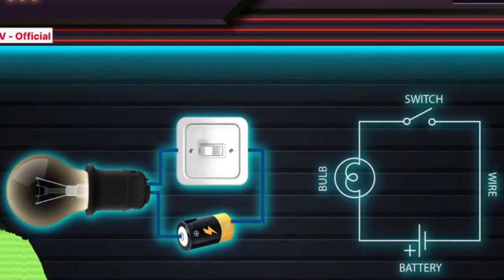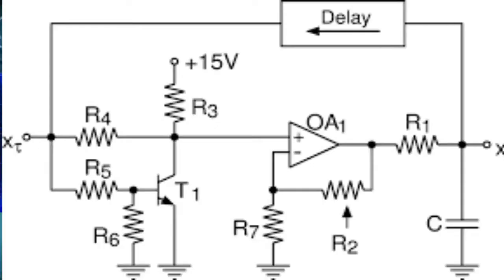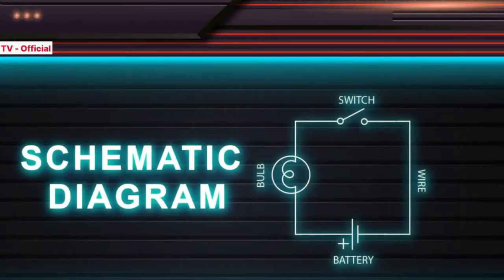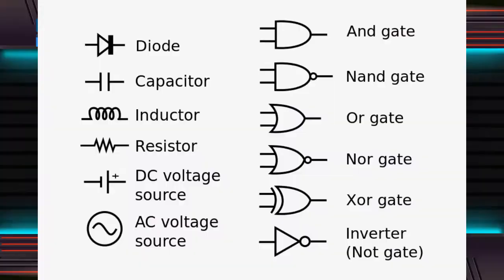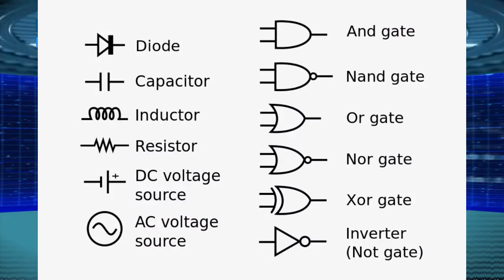A schematic diagram shows the components and interconnection of the circuit using standardized symbolic representations. In the electrical and electronics industry, a schematic diagram is often used to describe the design of a piece of equipment. Schematic diagrams are often used for the maintenance and repair of electronic and electromechanical systems.